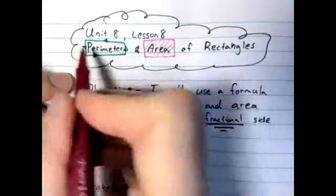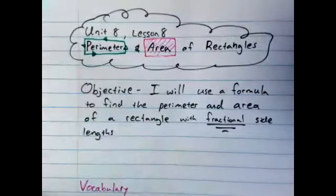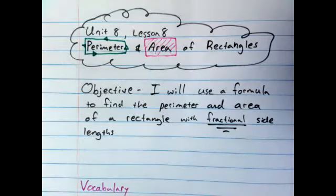So perimeter is outside, area is inside. All right, let's take a look at our objective together.